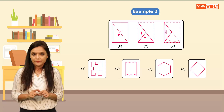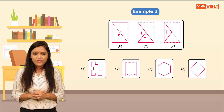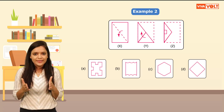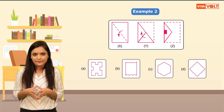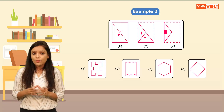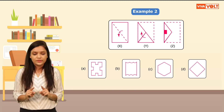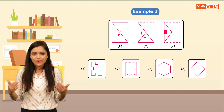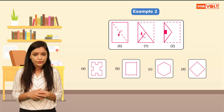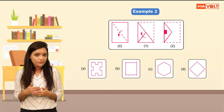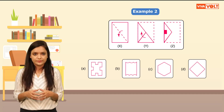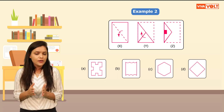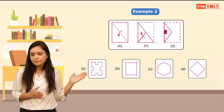We need to fold this again. Now let's cut a square here. Before unfolding this paper, let's analyze and visualize how it would look once we unfold it. We have cut the square along the edges of this paper.